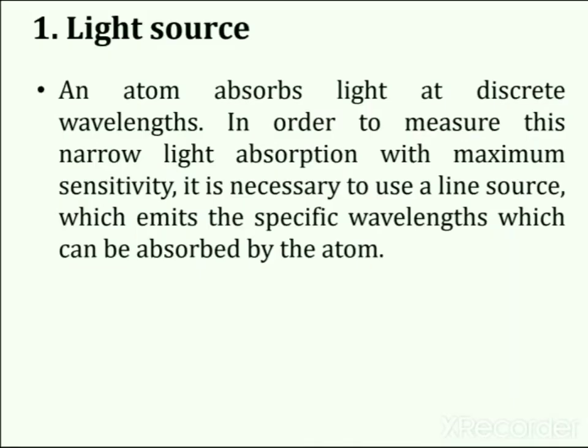The radiation or light source is the first part of the atomic absorption spectrophotometer. An atom absorbs light at discrete wavelengths, so in order to measure this narrow light absorption with maximum sensitivity, it is necessary to use a line source. Line sources emit the specific wavelengths that can be absorbed by the atom, providing high sensitivity and making atomic absorption a very specific analytical technique with few spectral interferences.